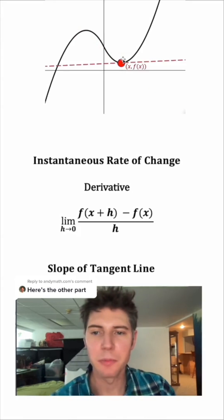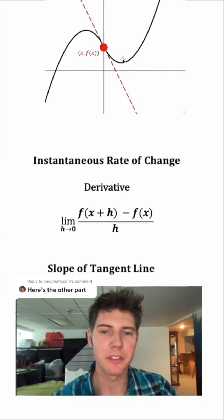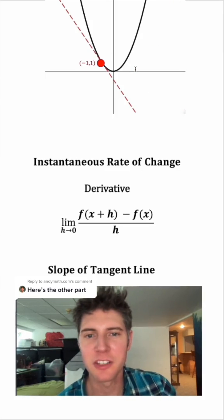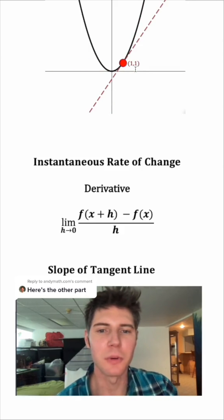As this moves around, we can find the slope of the tangent line for all of these points. Let's do a specific example. Let's look at the parabola y equals x squared. And we can see that there's different tangent lines for it as well.